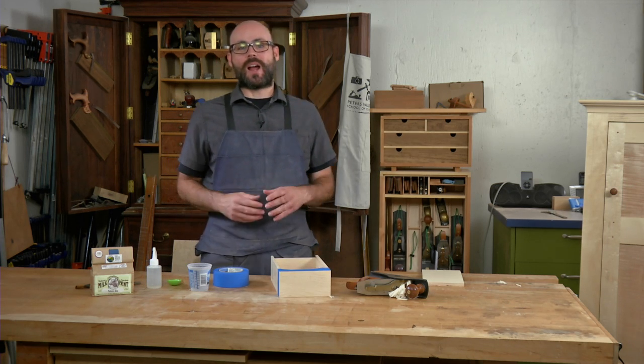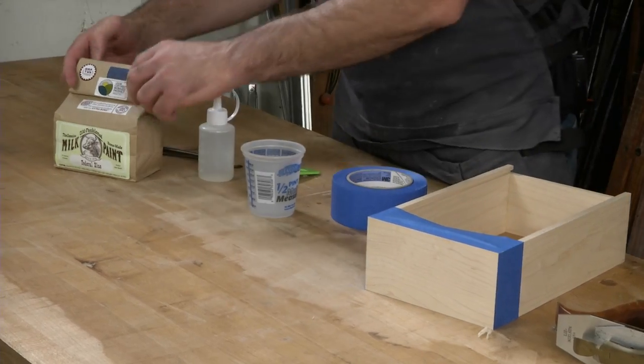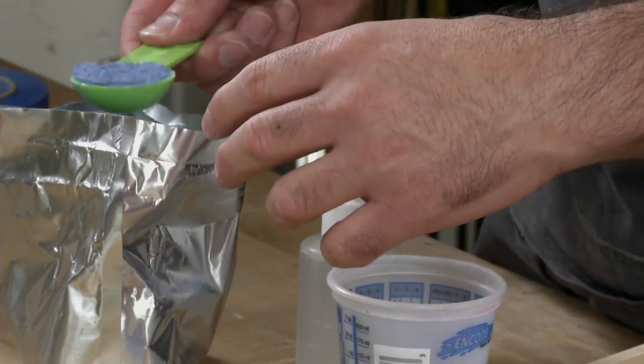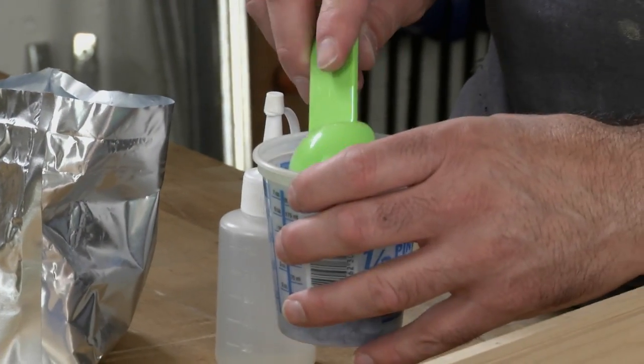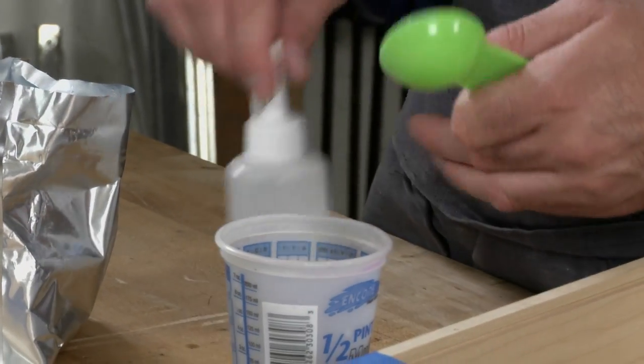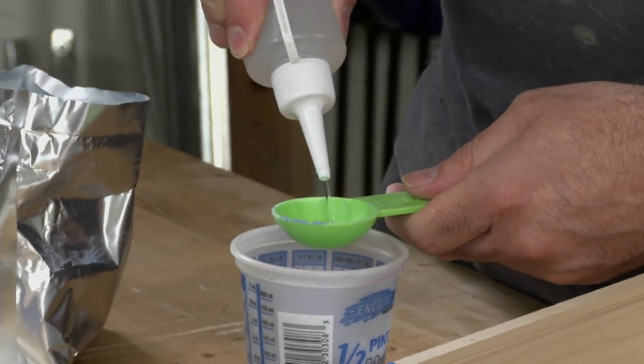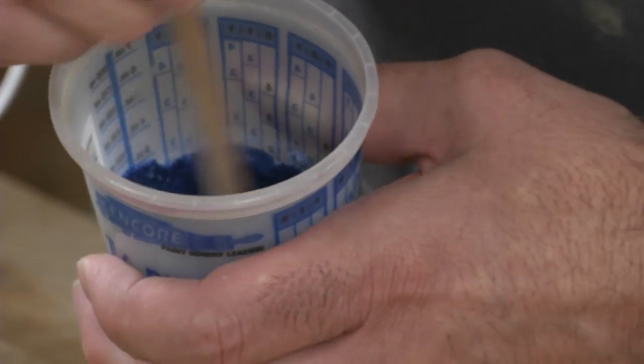You can't beat the variety of period colors available in milk paint. The fact that it can be mixed up in small batches is a nice bonus. The powder is mixed with water at a 1 to 1 ratio. Once you've thoroughly mixed the paint, let it sit for at least 5 minutes.